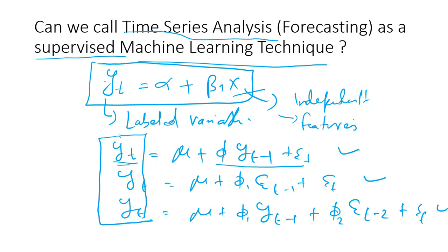There is the exogenous variable and the endogenous variable, or you can call it independent and dependent variable. The concept remains the same except that the independent variable in time series analysis is either the lag of the same variable or the error term. Hence, going back to the definition of supervised machine learning, you train your model in such a way that it is able to find out the value of a target variable. So you can call time series analysis a supervised machine learning technique.